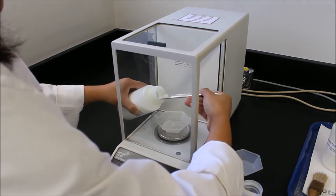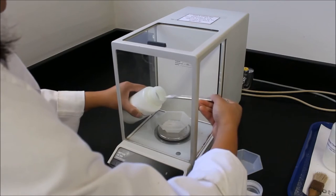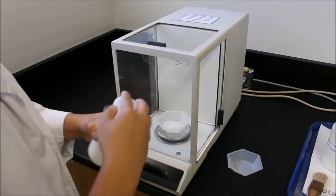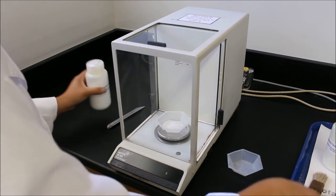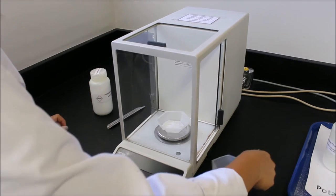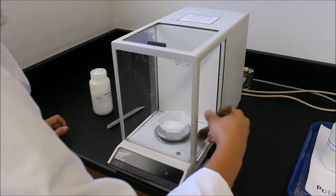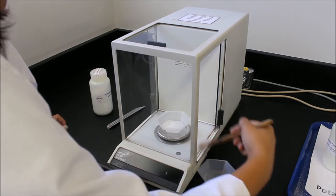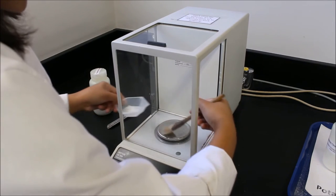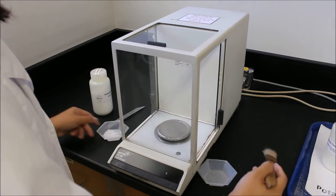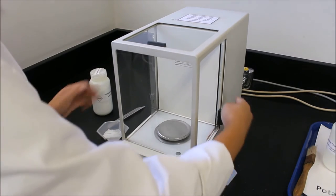And if by accident you end up spilling some of your compound, you're going to want to clean that up with a brush that is usually found next to the analytical balances. You'll just sweep it into this little waste container and you'll be all ready to go. Make sure that you clean these after you're done using them so that we can keep this lab nice and tidy.